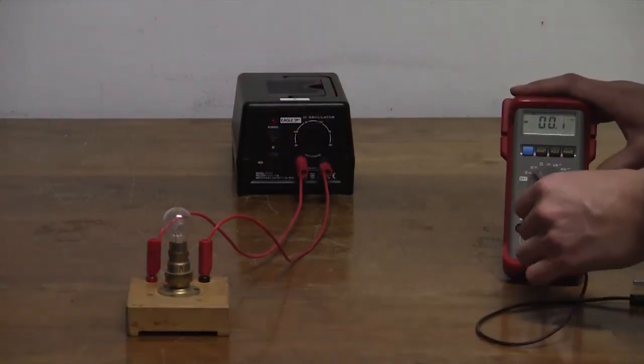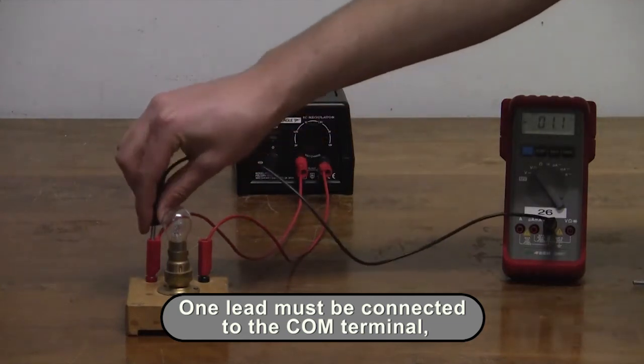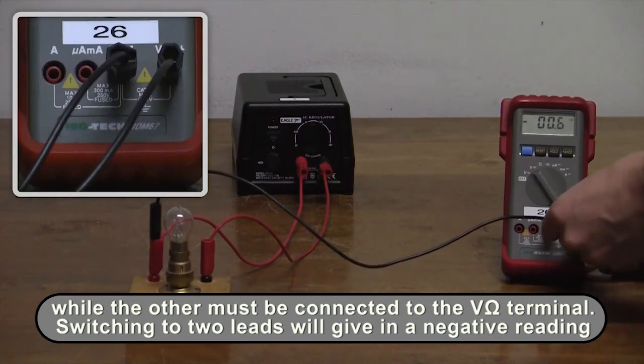To measure the voltage across a lightbulb, we must connect the multimeter in parallel with one lead connected to the comm terminal and the other lead connected to the terminal labelled V omega.